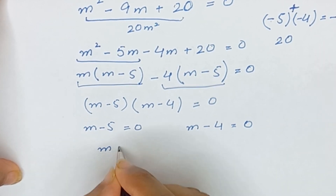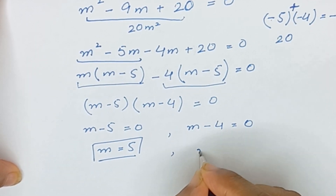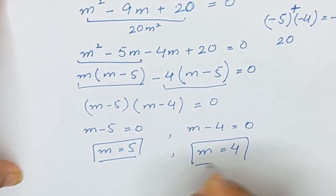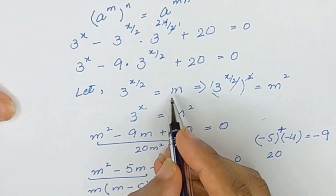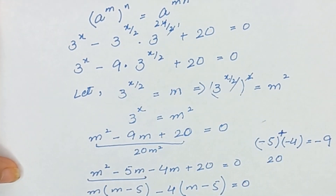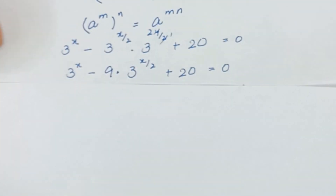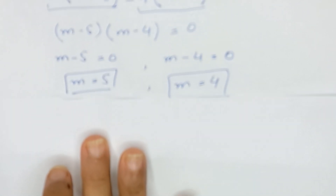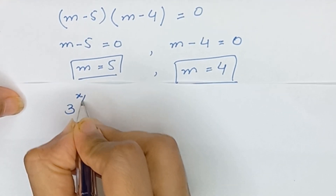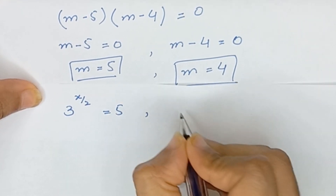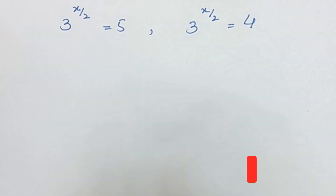We have two cases: m minus 5 is equal to 0, giving m equals 5; or m minus 4 is equal to 0, giving m equals 4. Recalling that m is equal to 3 to the power x divided by 2, it becomes 3 to the power x/2 equals 5, and 3 to the power x/2 equals 4.